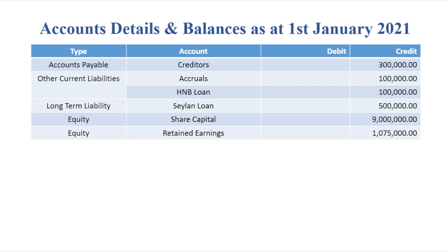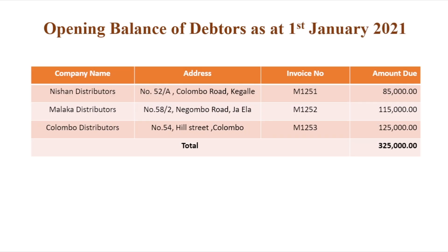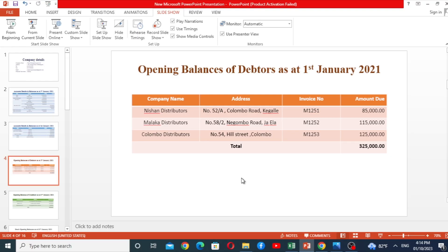This covers the opening balances of debtors as of 1st January 2021. The debtors' balance is not only in debtors, but the customer balance includes customer name, address, invoice, amount, etc.